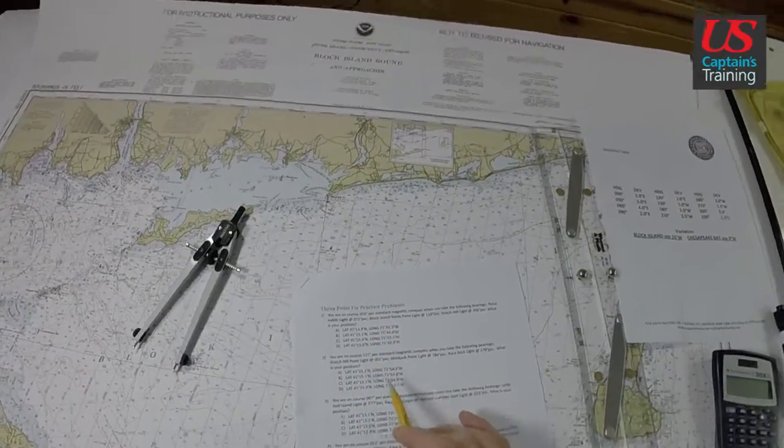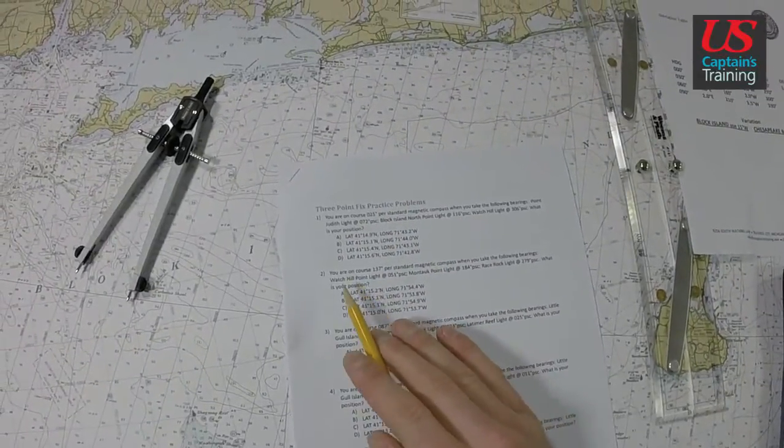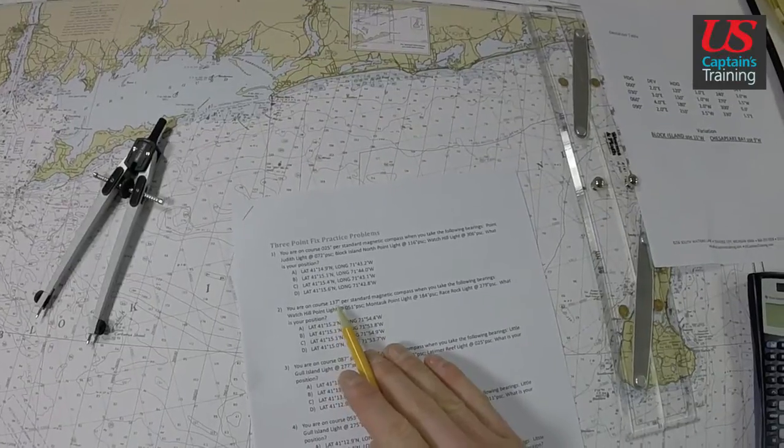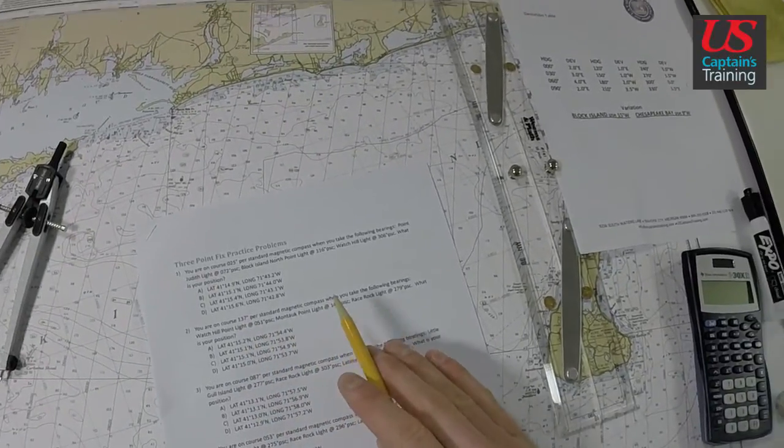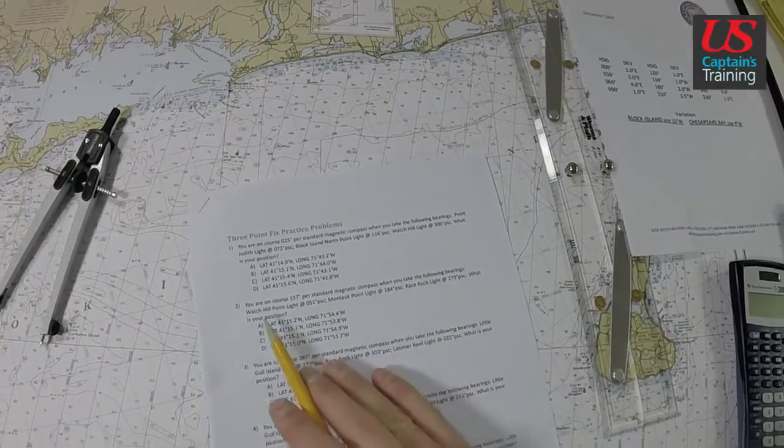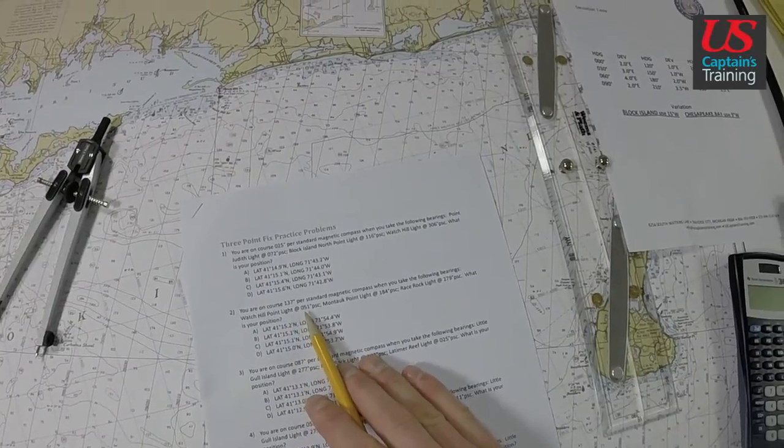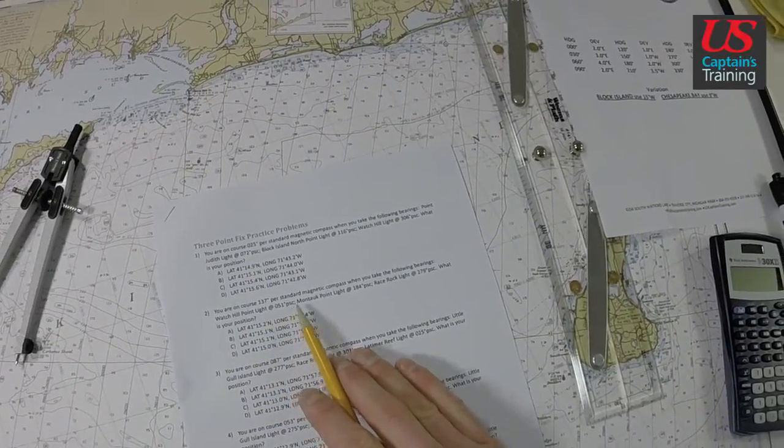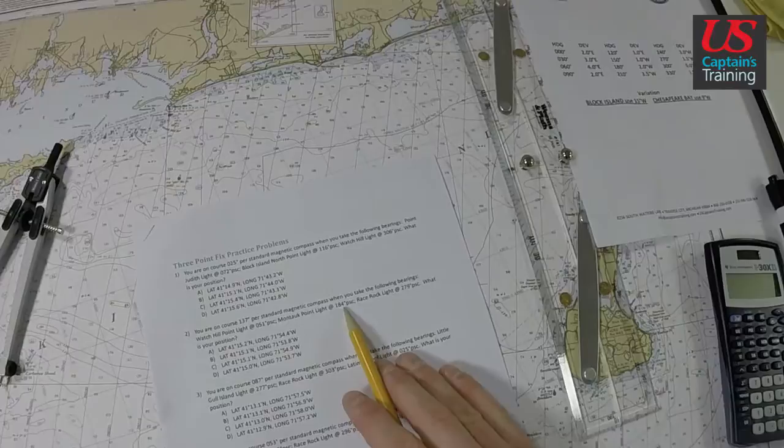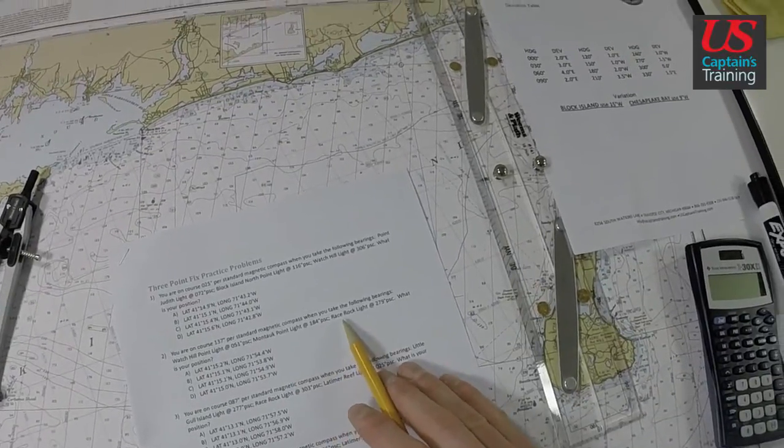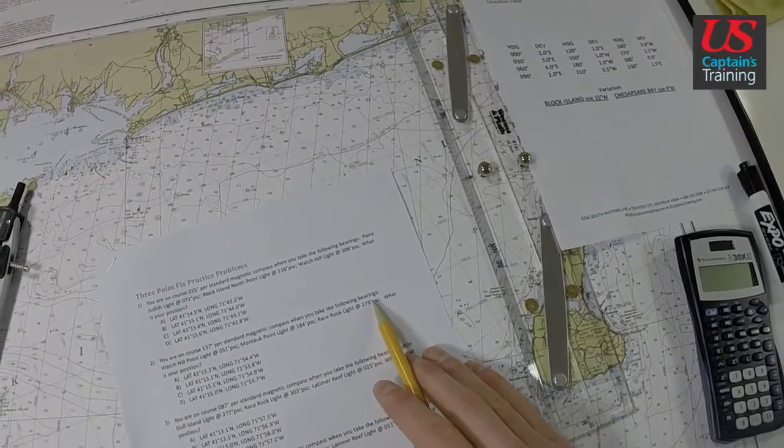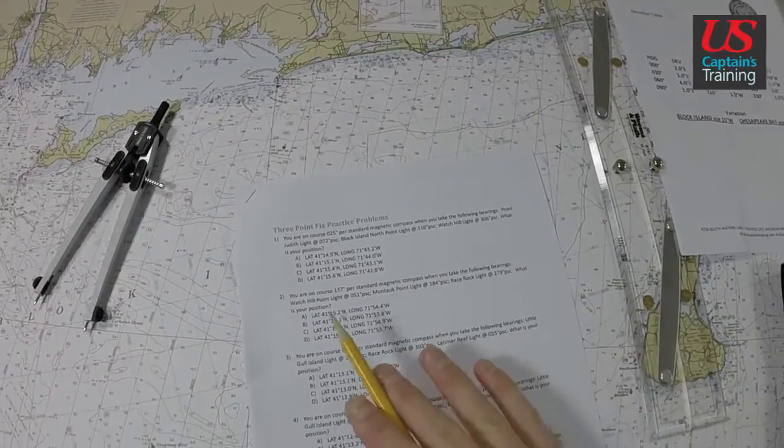Three Point Fix, Practice Problem 2 says: you are on course 137 per standard magnetic compass when you take the following bearings - Watch Hill Light at 051 degrees PSC, Montauk Point Light at 184 degrees PSC, Race Rock Light at 279 degrees PSC. What is your position?